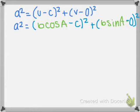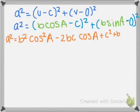Now we're going to calculate the squares and get a squared equals b squared cosine squared A minus 2bc cosine A plus c squared plus b squared sine squared A.